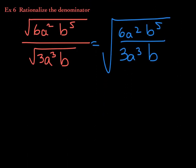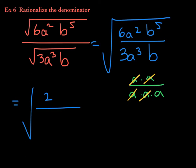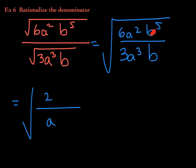Simplifying inside: 6 divided by 3 is 2. For the a terms, a squared over a cubed leaves one a in the denominator. For the b terms, b to the fifth over b to the first simplifies to b to the fourth in the numerator. So we have the square root of 2b⁴ over a.